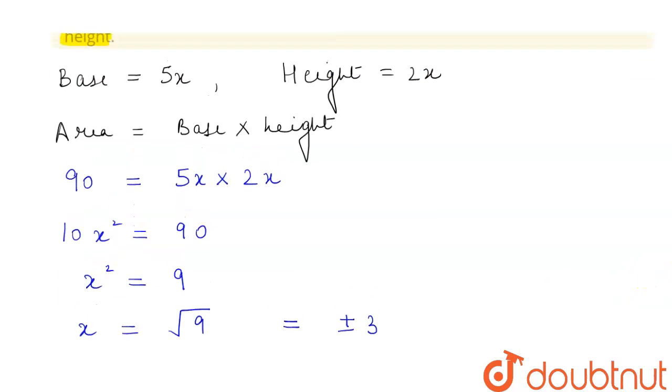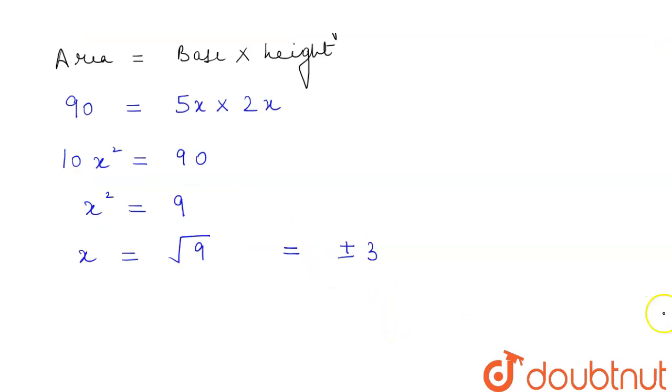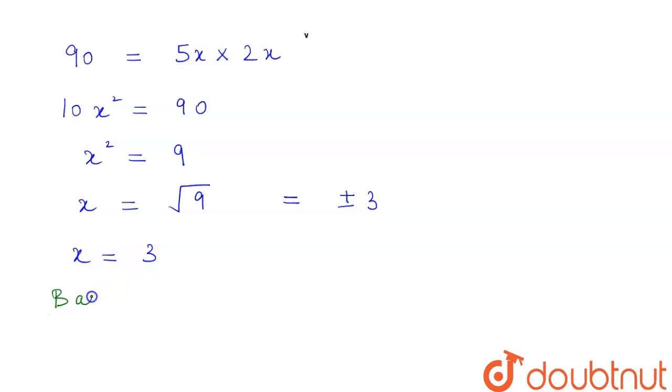But we know that since we are talking about height and the base which are lengths, and lengths cannot be negative, therefore our value of x will be equal to 3. We are to find our base and height.